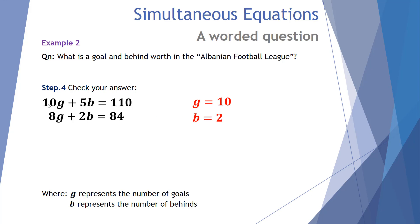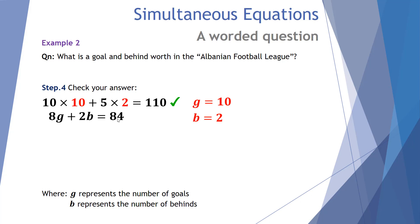So every goal is worth 10 points and every behind is worth 2 points in the Albanian Football League. Let's check: the Cats' score — 10 goals and 5 behinds — gives 10 times 10 plus 5 times 2 equals 100 plus 10 equals 110 ✓. The Dogs' score — 8 goals and 2 behinds — gives 8 times 10 plus 2 times 2 equals 80 plus 4 equals 84 ✓. So a goal is worth 10 points and a behind is worth 2 points.